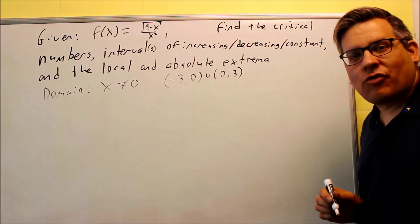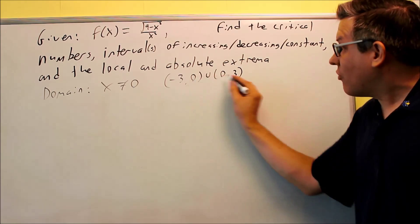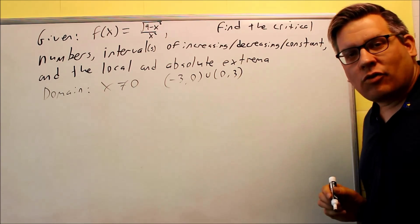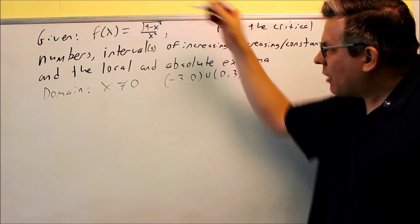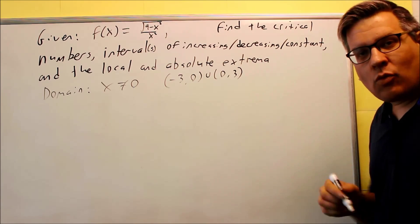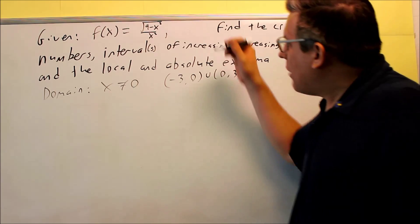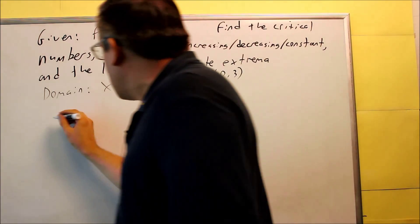All right, let's try and attempt to find if there are any critical numbers here. Let's see if they fall in this interval or not. This kind of problem, because we have a division happening, we need to do this by the quotient rule. So I'm going to do quotient rule for this.